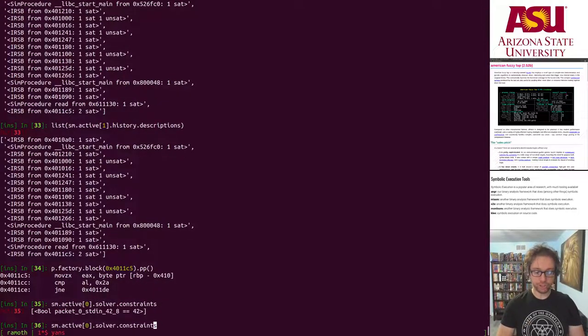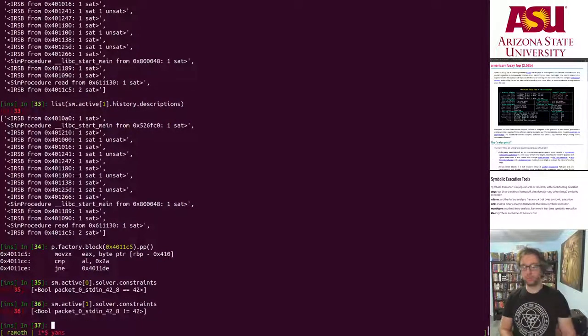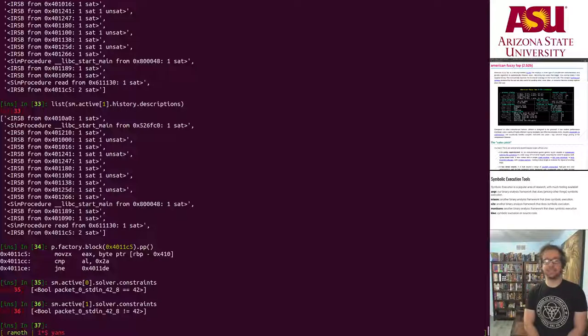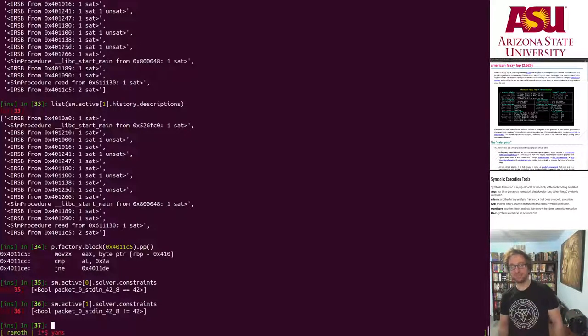Cool. One more thing I want to show you. On one state we have a constraint that the input equals 42. On the other one we have a constraint that the input does not equal 42. Pretty cool, huh?